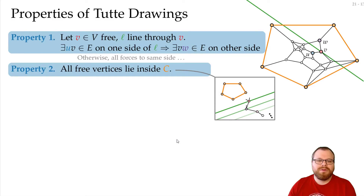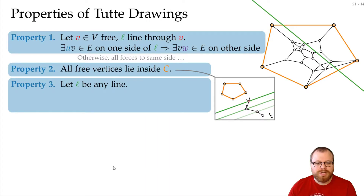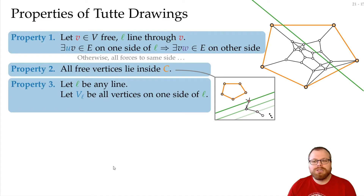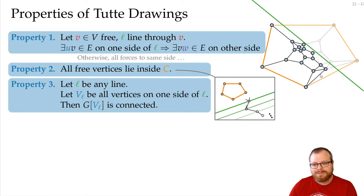Property 3. Now we don't have a fixed vertex, but just any line. We look at all the vertices on one side of this line — say below. The subgraph induced by those vertices (only the edges between them) is connected. So the part on one side is connected and the part on the other side is also connected. This is a pretty strong property.